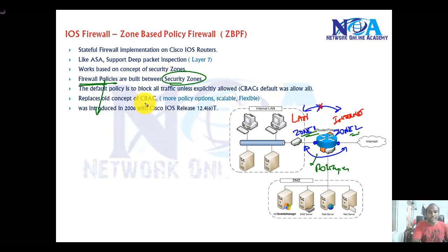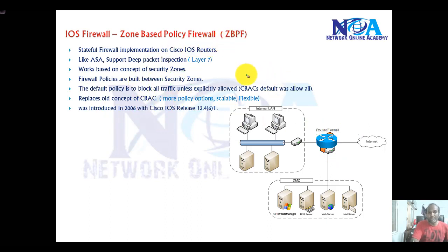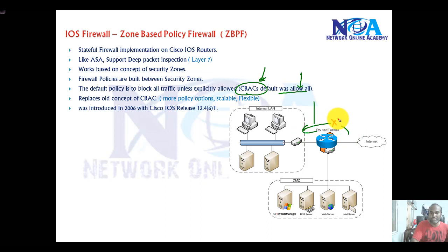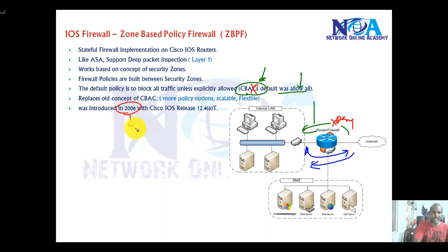Zone-Based Firewall replaces the older feature called CBAC. CBAC is no longer used; its default rule allowed all traffic, and deny statements along with ACLs were configured to control traffic flow. This newer feature was introduced in 2006 and is supported starting from IOS version 12.4 and later on all service routers.